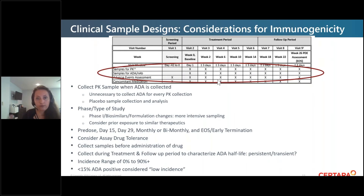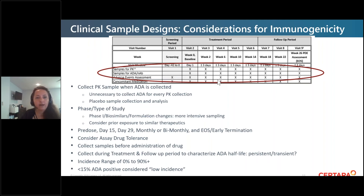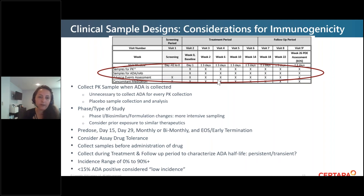Some considerations when designing your clinical trial: always collect a PK sample when an ADA sample is collected, not the other way around. You definitely need to collect pre-dose. FDA divisions have asked for a day 15 sample to detect early-onset immunogenicity, then usually day 29, then monthly or bi-monthly, and definitely at the end of the study to check for persistent ADA. More intensive sampling is needed for phase one biosimilars or formulation change studies. Always collect before dosing to limit drug interference. ADA incidence can range anywhere from 0–1% up to 90%; I consider anything under 15% a low incidence.